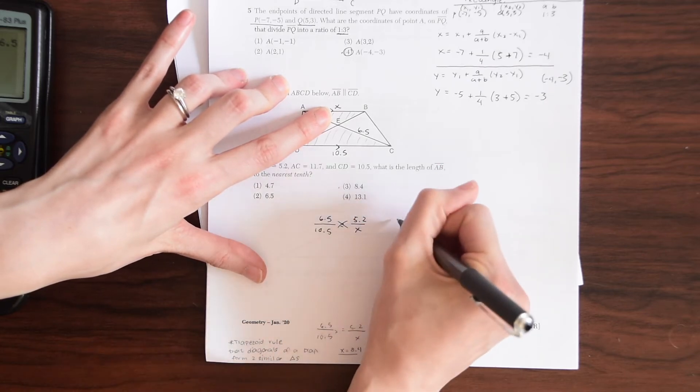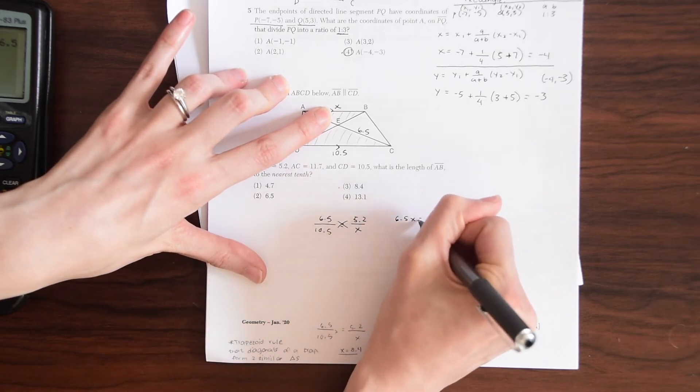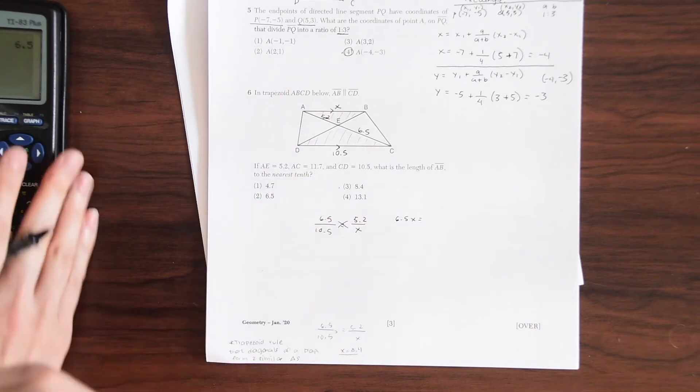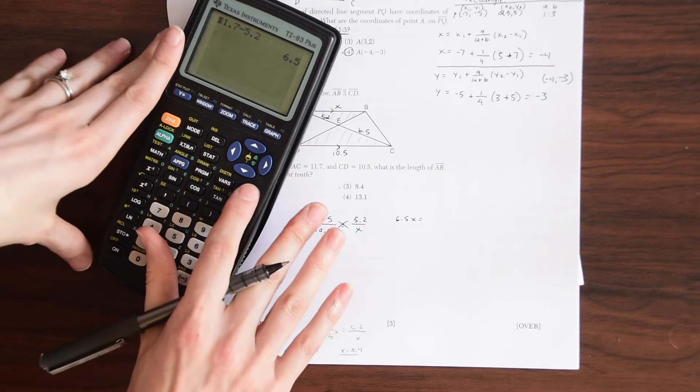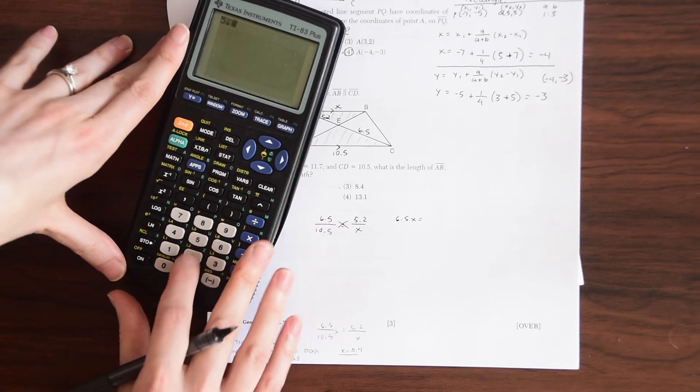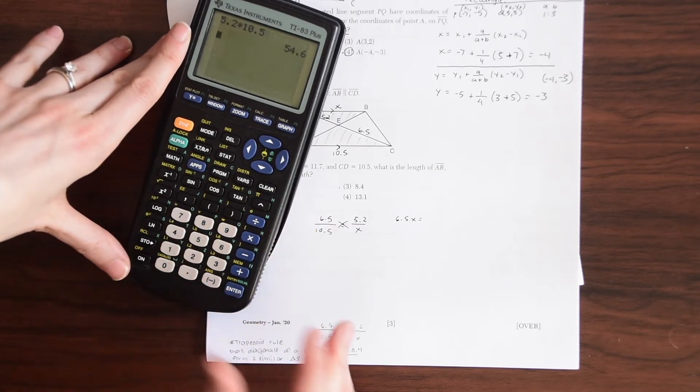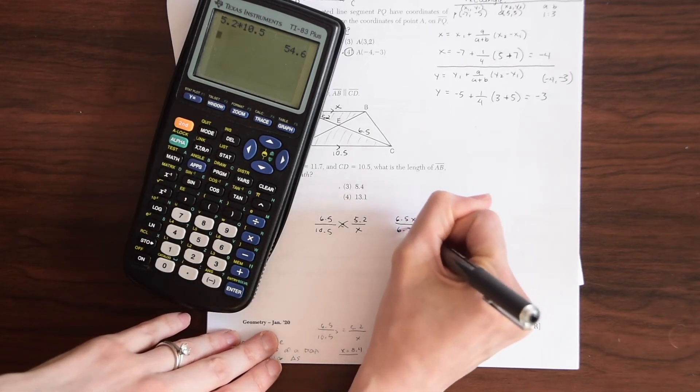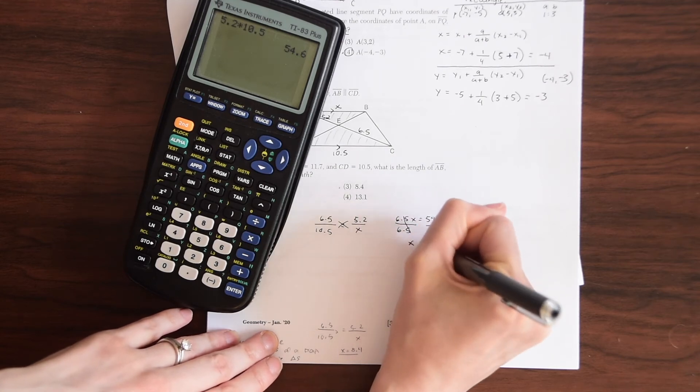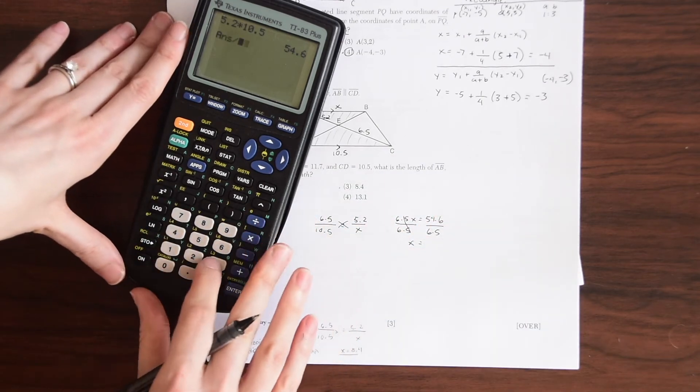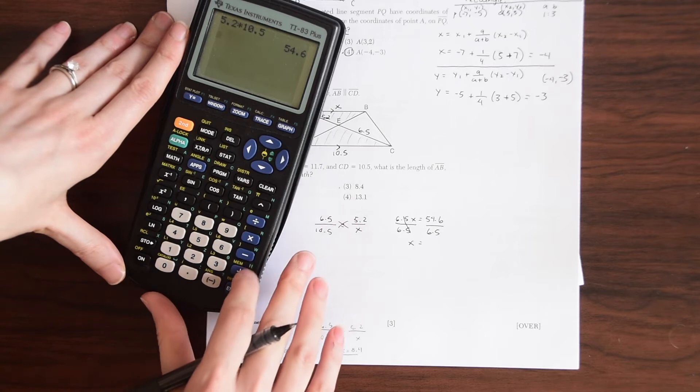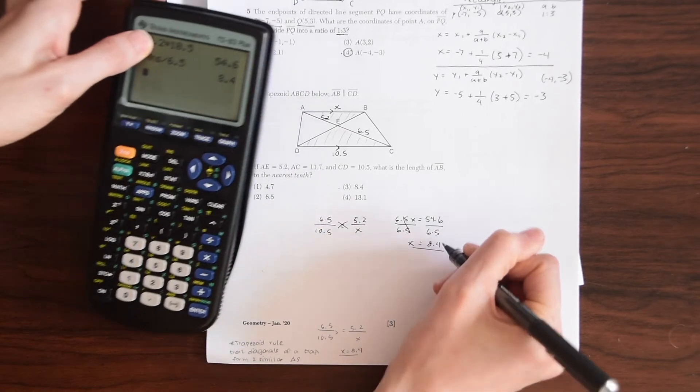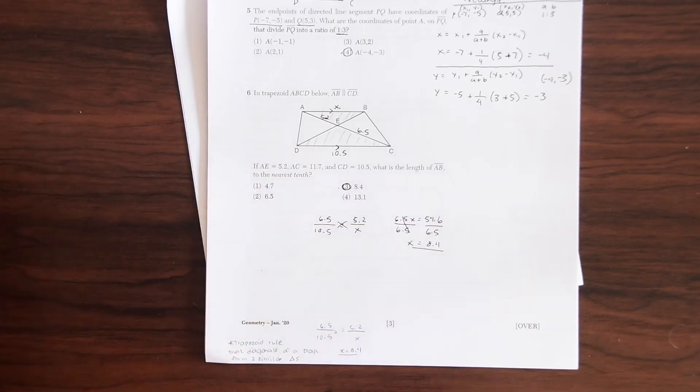So then we can cross multiply and we'll get 6.5X is equal to 5.2 times 10.5. So we're doing 5.2 times 10.5, this is 54.6, divide 6.5 on both sides and we get X is equal to 8.4. So that's our answer for this question.